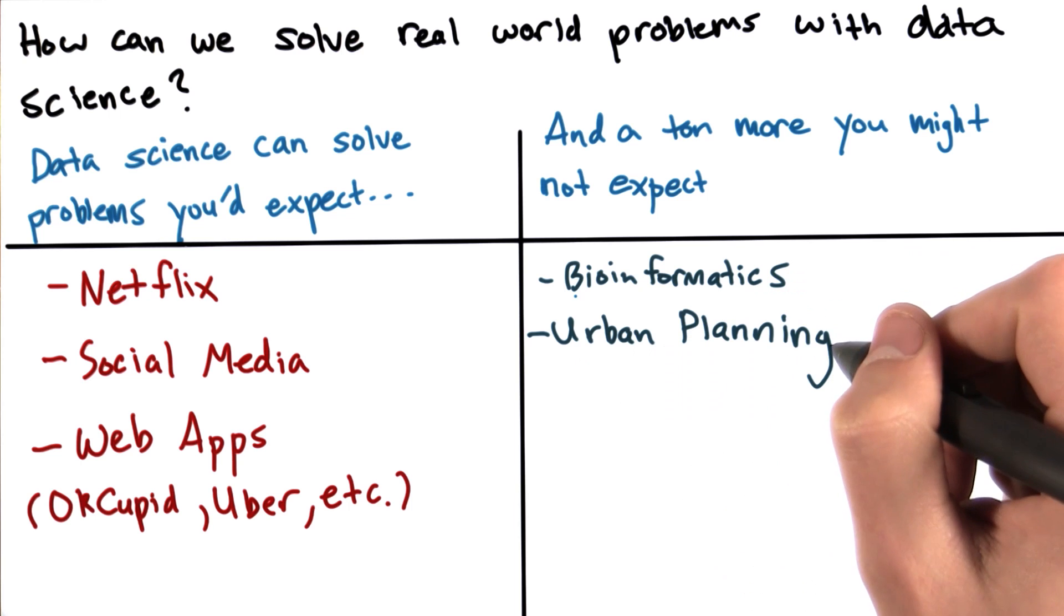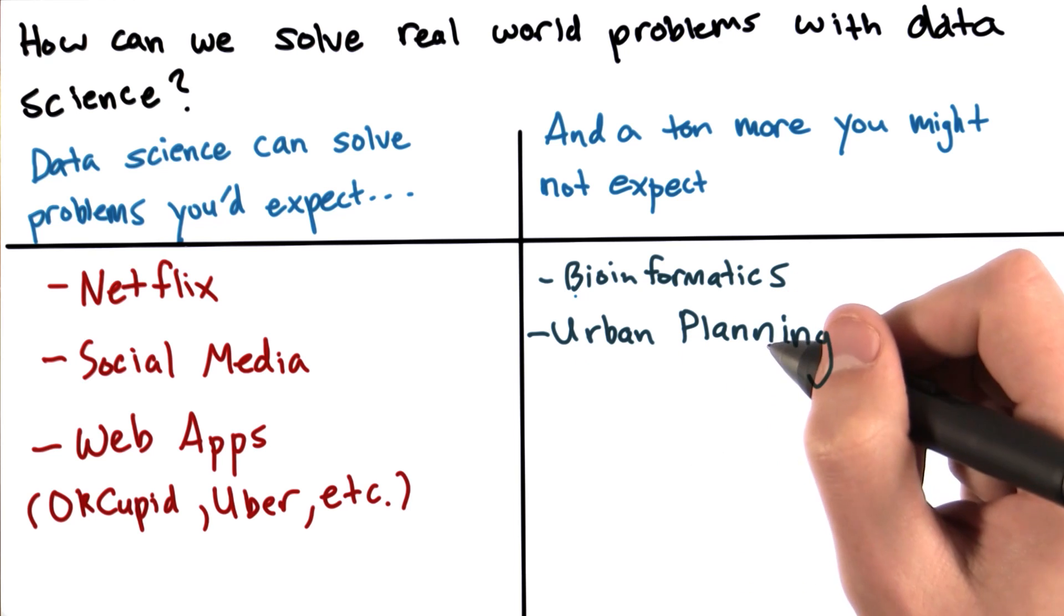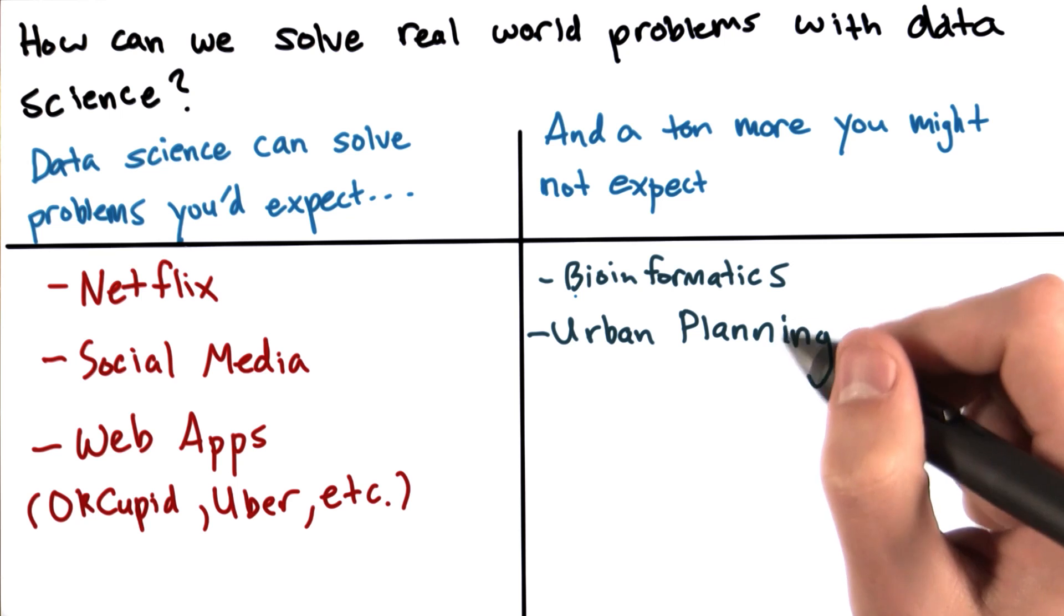This past summer, data science for social good fellows in Chicago worked on a project attempting to solve Chicago's bus crowding issues using data.